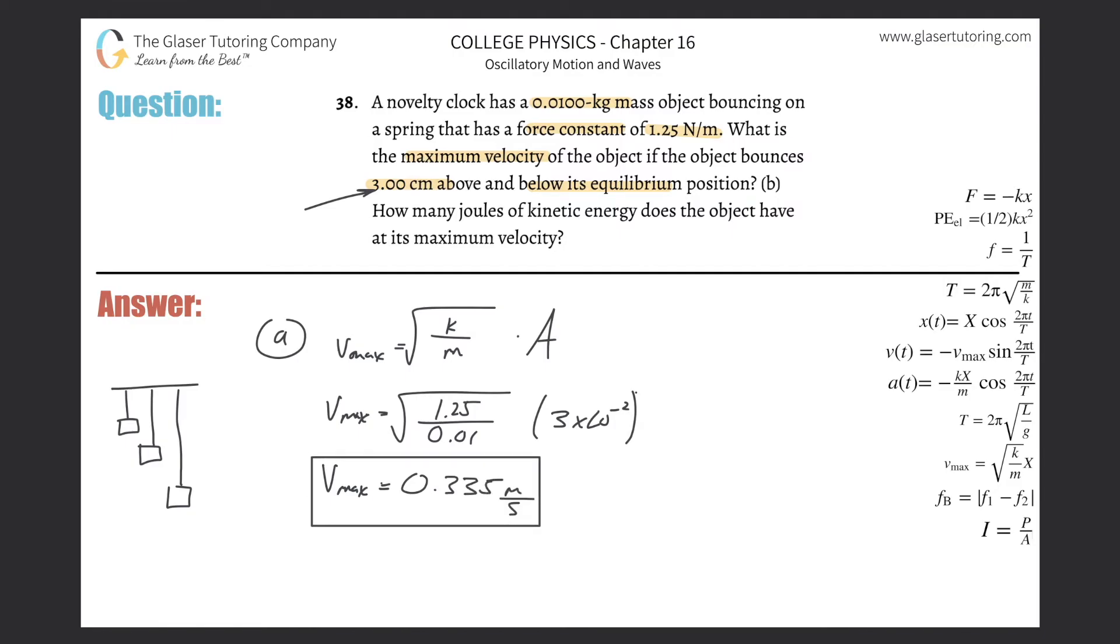Alright, so there you go. That's letter A. Letter B now. How many joules of kinetic energy does the object have at its maximum velocity?